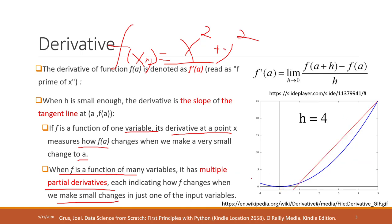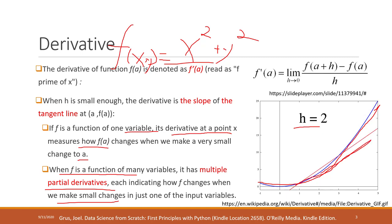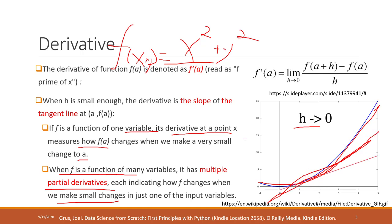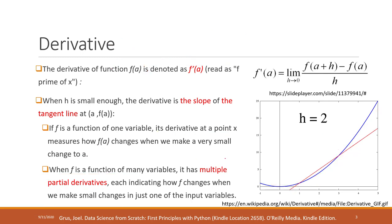Let's say we have this function shown as the blue line. We can see that when h is small enough, the derivative indicates the slope of the tangent line at that position. So that is the derivative.